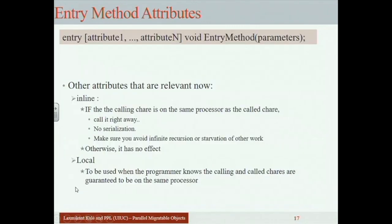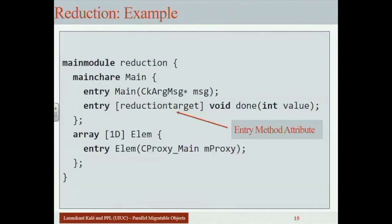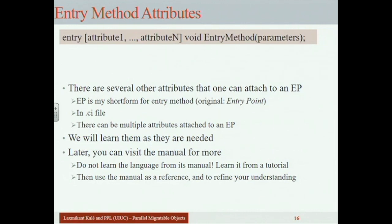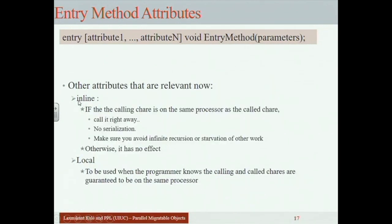Entry method attributes are declared in the .ci file and written in square brackets before the entry keyword. You can have more than one attribute. For example, the 'inline' attribute is an optimization: if the calling chare is on the same processor as the target chare, it calls it right away with no serialization/deserialization and no asynchronous buffering. The tradeoff is the call is no longer asynchronous — you remain blocked until that method finishes.